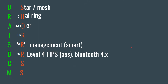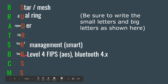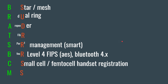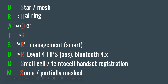For the Bluetooth mitigation, we're going to use 'four' — the word four with the R at the end — and that's going to stand for level four FIPS or Bluetooth 4.x, so basically anything above four point whatever. For cellular, you're going to use small cell or femtocell handset registration. For the mesh — bypassing access controls — you're going to use the word 'sum,' meaning partial mesh, as a mitigation.